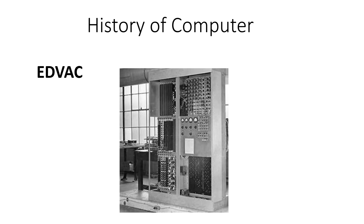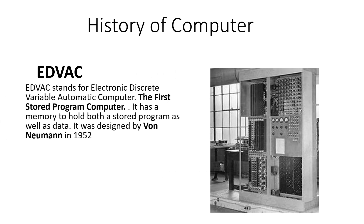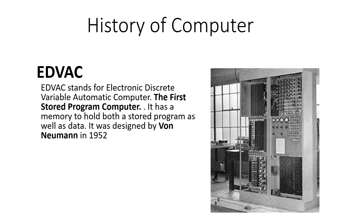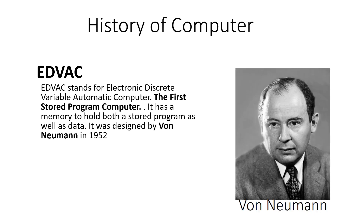EDVAC — Electronic Discrete Variable Automatic Computer — was the first stored program computer, as it had memory to hold both a stored program as well as data. It was an important machine in the history of computing and was designed by John von Neumann in 1952.